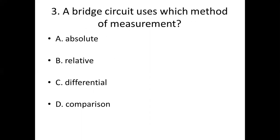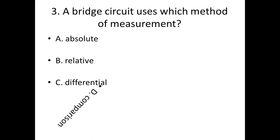Third bit. A bridge circuit uses which method of measurement? Option A: absolute. Option B: relative. Option C: differential. Option D: compression. Answer: Option D, compression.